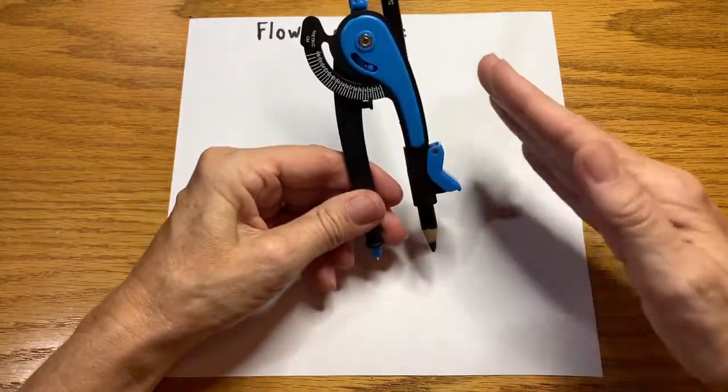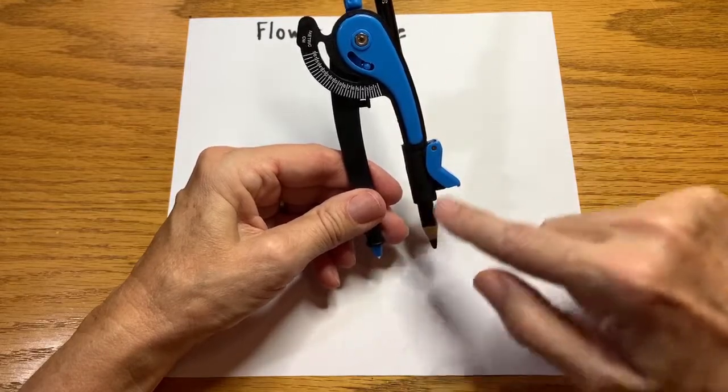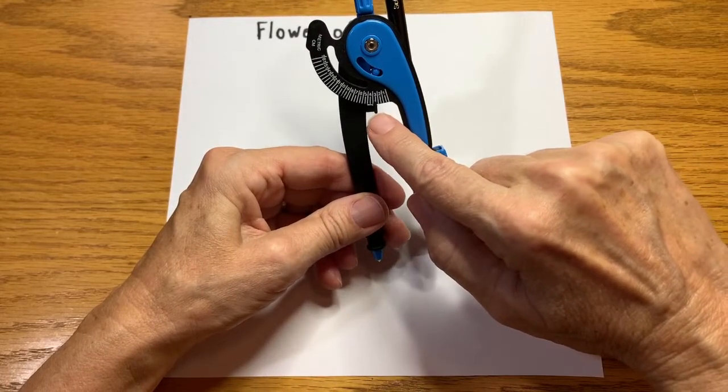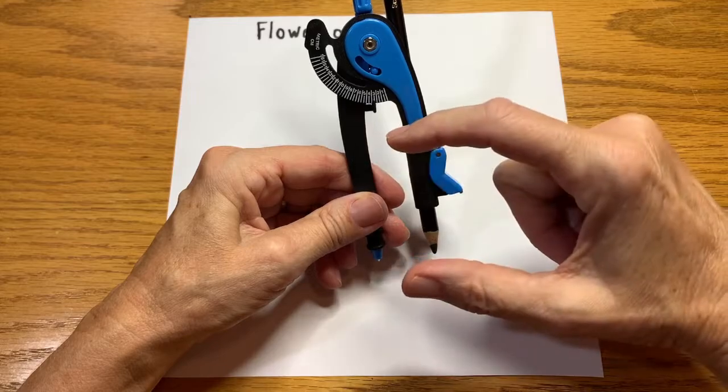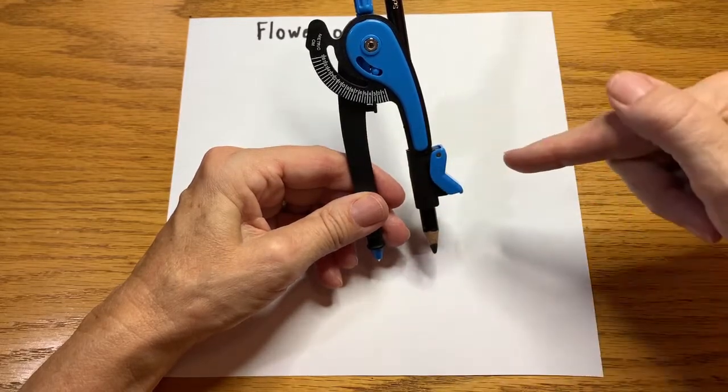It's important that you are consistent with the size. For example, I've got mine on a three right now. It doesn't matter what size, but it has to remain consistent for the whole piece.